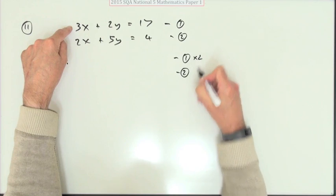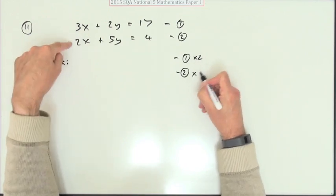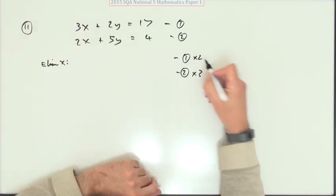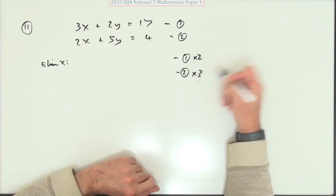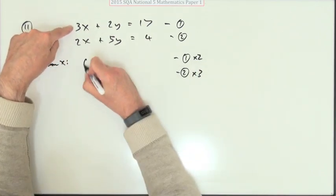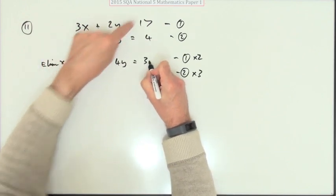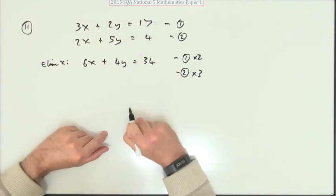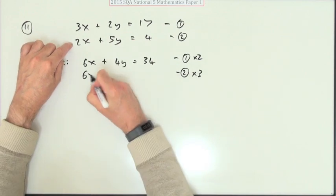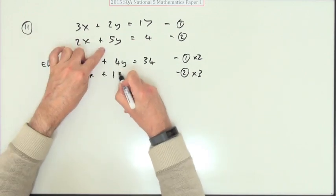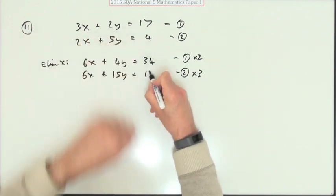If I double this one, I'll get 6x, and if I triple that one, I'll get 3x, and I'm quite happy with my two and three times table. So doubling this one: 6x plus 4y equals, and that's not scary, four times two, 34. Three times this: 6x, three times that, 15y, three times that, 12.